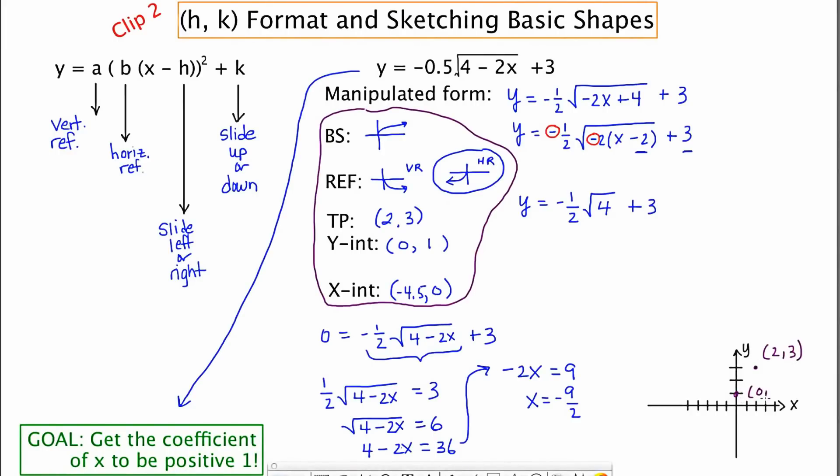And I've got the y-intercept at 0, 1. So I'll put zero one. And I've got an x-intercept at negative 4.5. One, two, three, four point five. So that's going to be 4.5, 0. And the basic shape is supposed to look like this guy here with the double reflection. And I think that's going to work. If I follow these three points, it's going to work perfectly.